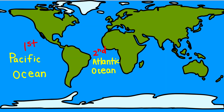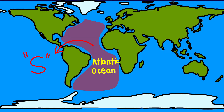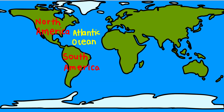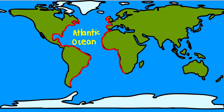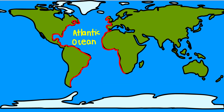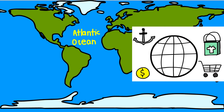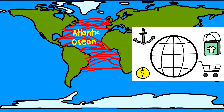The Atlantic Ocean is the second largest ocean in the world, and is S-shaped. It is flanked by North and South America on the western side, and Europe and Africa on the eastern side. The coastline of the Atlantic Ocean is highly indented.